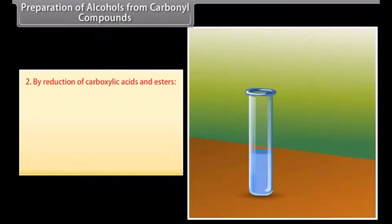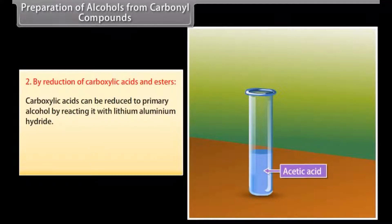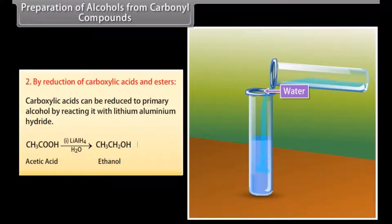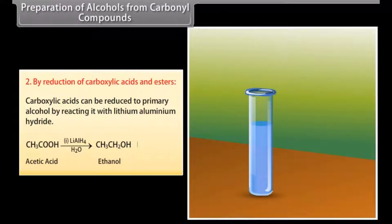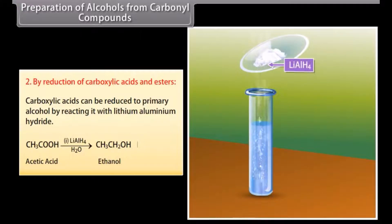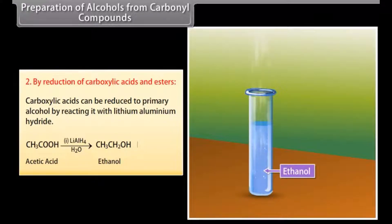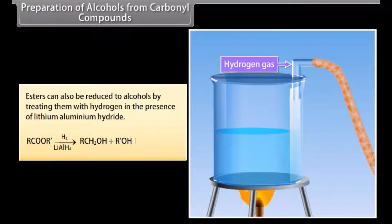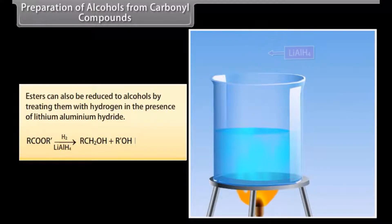Preparation from carbonyl compounds by reduction of carboxylic acids and esters. Carboxylic acids can be reduced to primary alcohols by reaction with lithium aluminium hydride — for example, lithium aluminium hydride reacts with acetic acid and water to form ethanol. Esters can also be reduced to alcohols by treating them with lithium aluminium hydride, forming the corresponding alcohol product.